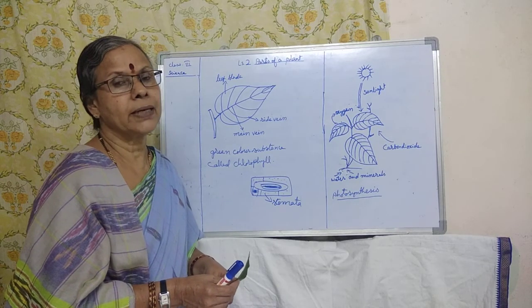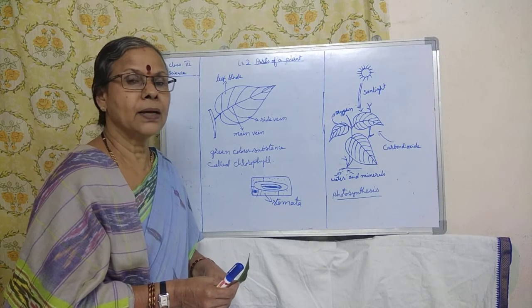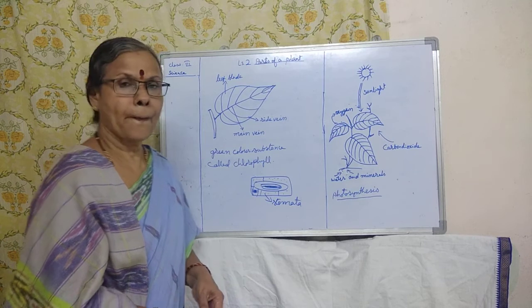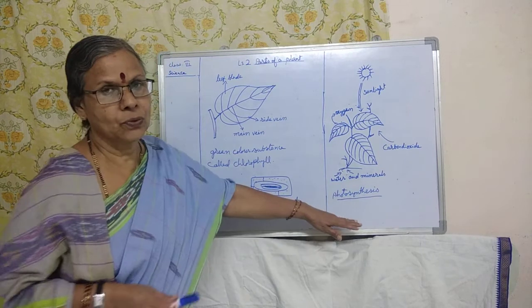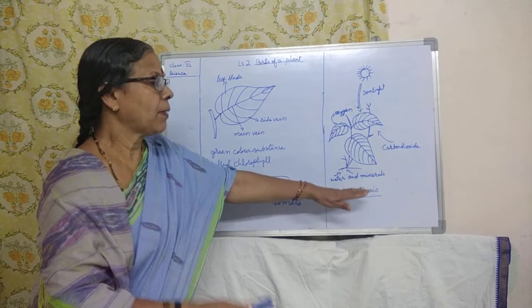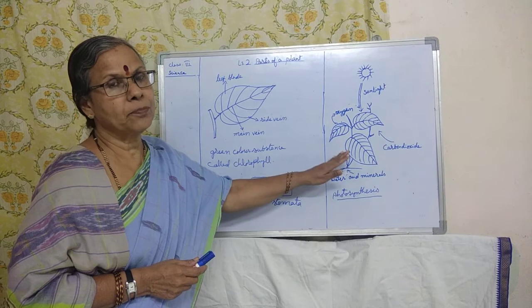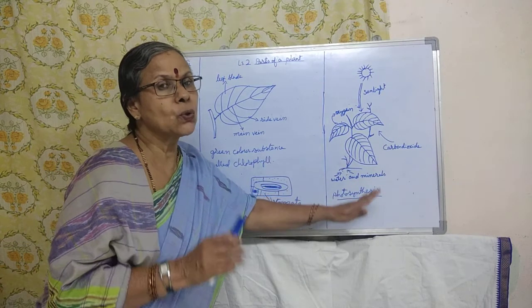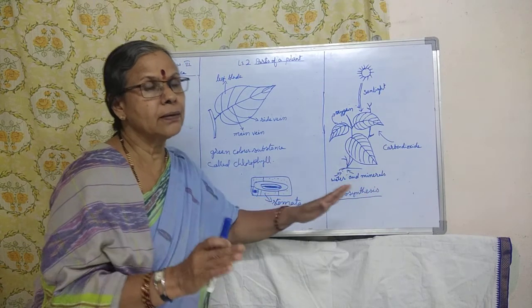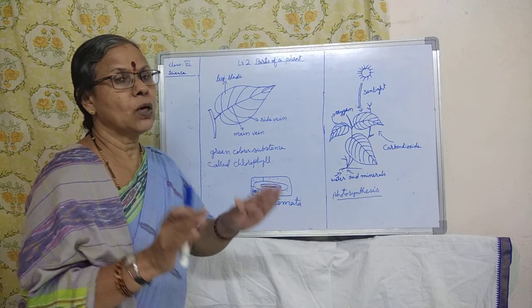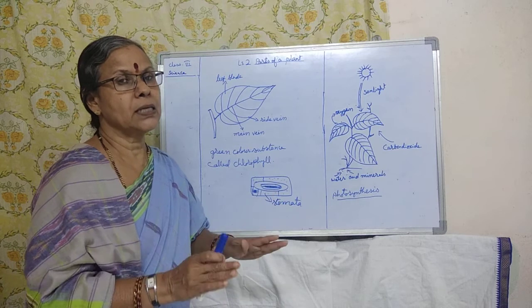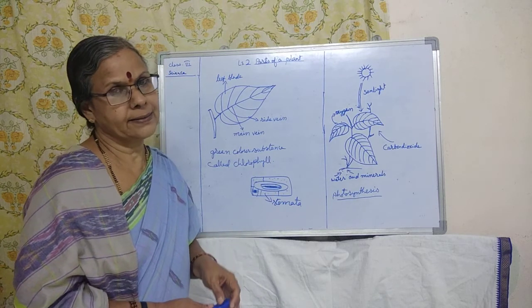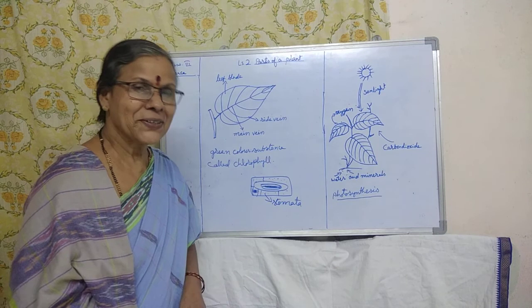The leaves change carbon dioxide and water into a kind of sugar which is stored and used by the plants. After preparation of food, part of the food is used up by the plant and part is stored in other parts. We will study those parts in our next class. Thank you.